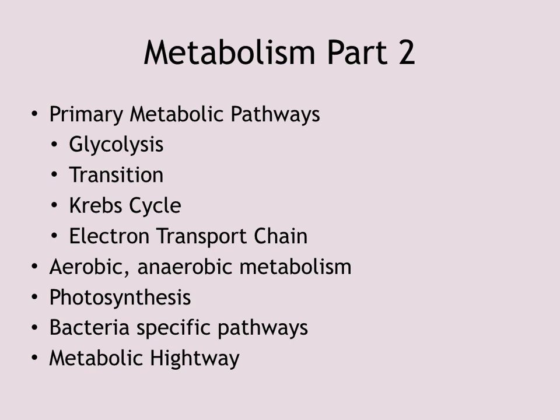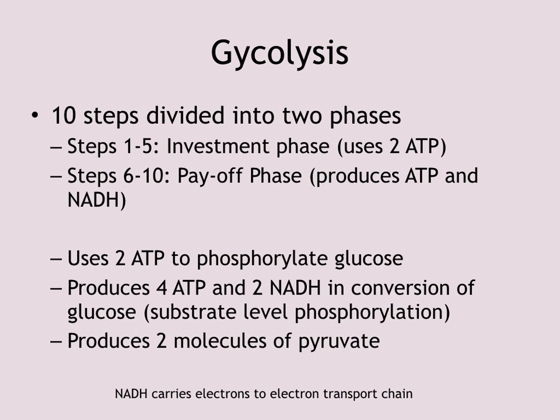We will also cover other forms of aerobic metabolism as well as anaerobic metabolism, and briefly touch on photosynthesis. We will also cover two pathways that are bacteria-specific, not found in eukaryotic metabolism. And finally, we will finish things off with the metabolic highway. Primary metabolism is the breakdown of glucose, the one sugar that most living things are capable of breaking down. We share primary metabolic enzymes with most other living organisms.